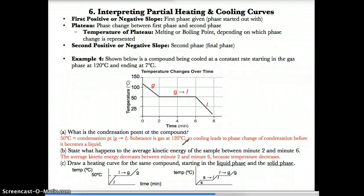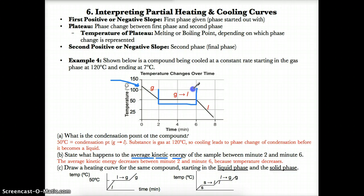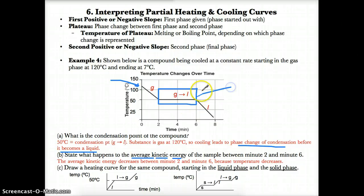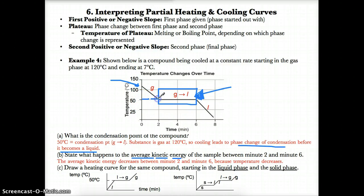To explain this more succinctly: as stated in the problem, the substance is a gas at 120 degrees Celsius, so the first phase is gas. When cooling produces a flat line, that phase change would be condensation before the substance becomes a liquid, because condensation is the only cooling-related or exothermic phase change that involves a gas. We find the Y value at the plateau, which is 50 degrees Celsius — that's our condensation point.